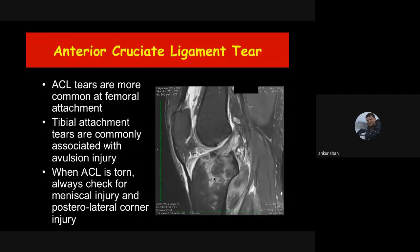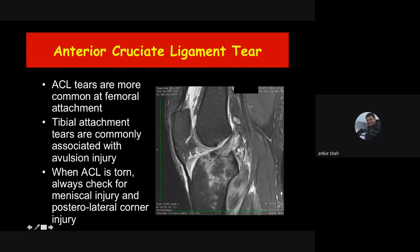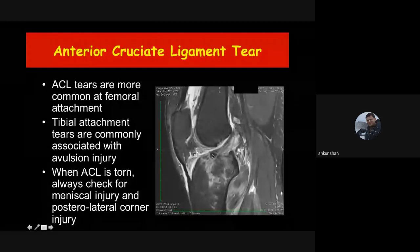ACL tears more commonly occur at the femoral attachment or mid part; tibial attachment tears are less common, and the most common tibial attachment injury is an avulsion fracture of the tibial attachment of the ACL. The patient presents with classic symptoms of ACL tear — instability and positive drawer test — because the ACL is not functioning, even though the ligament itself is intact. The treatment is completely different for primary ACL tear versus bony avulsion, so it is very important to distinguish between ligament tear and bony injury.